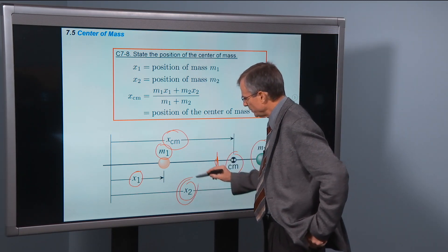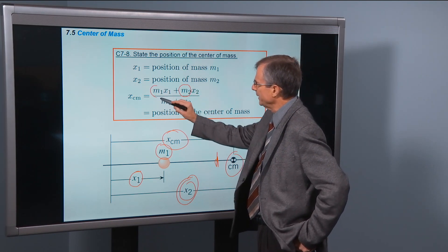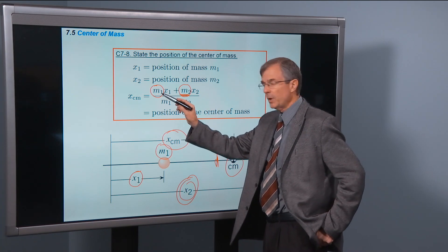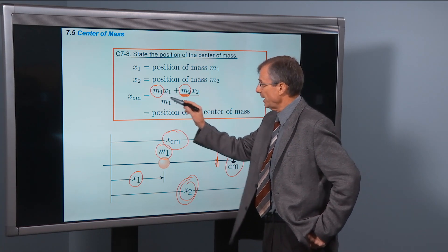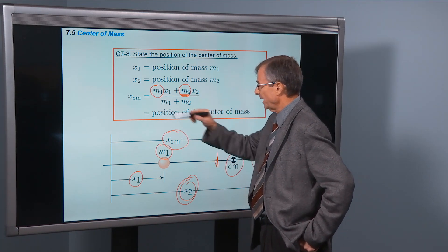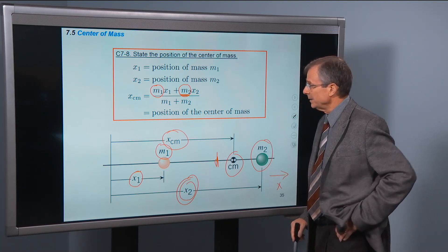The center of mass will be closer to x-two if m-two is bigger than m-one. That would just say that this weighting is heavier than m-one. And if m-one is zero, x-one won't even come into the equation and you just get x center of mass equals x-two.